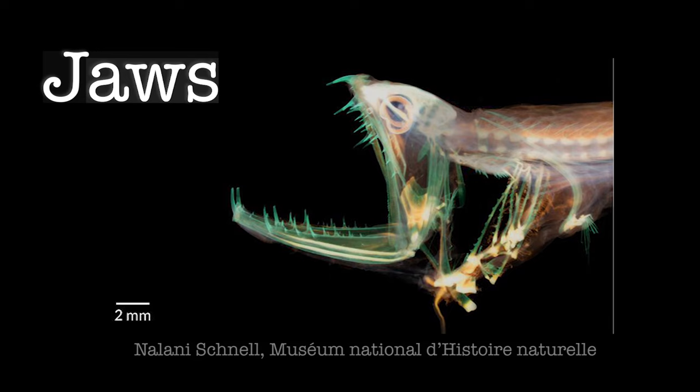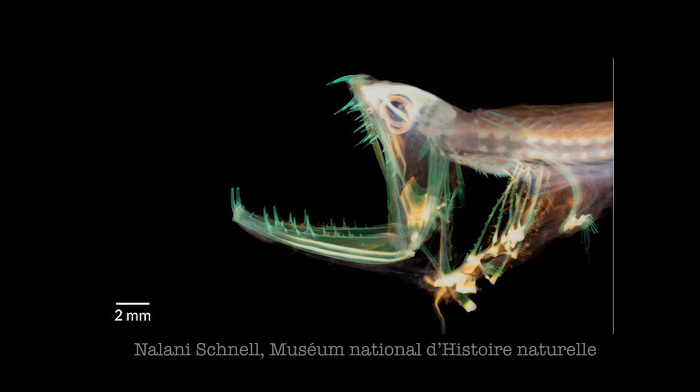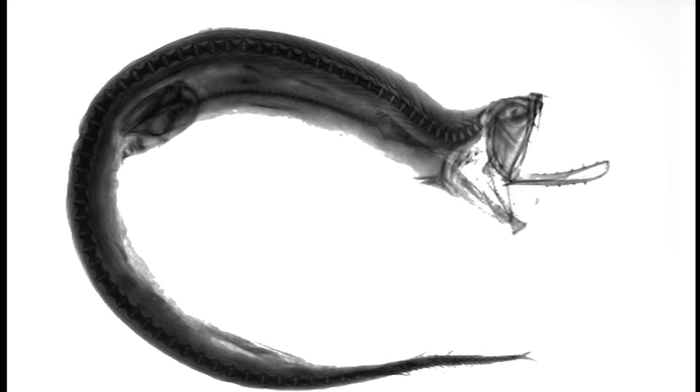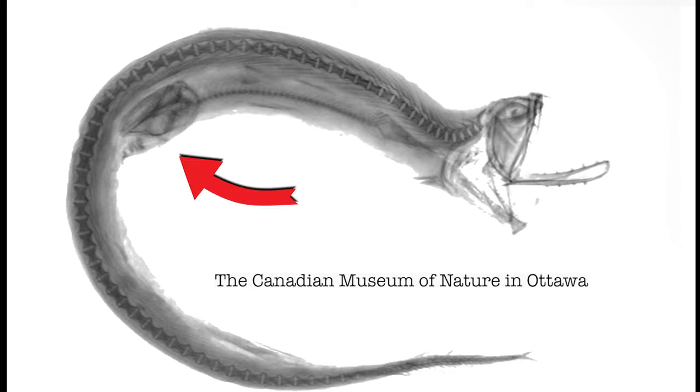It's been discovered that some species of dragonfish open their jaws like pez dispensers, thanks to a flexible joint at the base of their skulls. The joint allows the fish to swallow bigger prey, which they can trap in their fang-like teeth. In the belly of this boa dragonfish, you can see the entire body of its last meal.